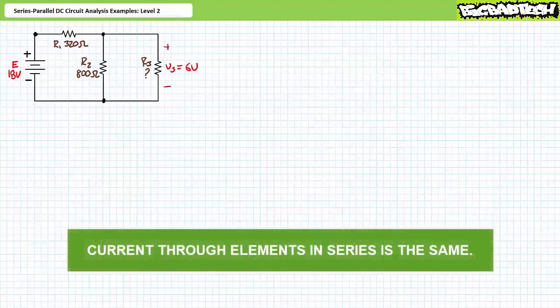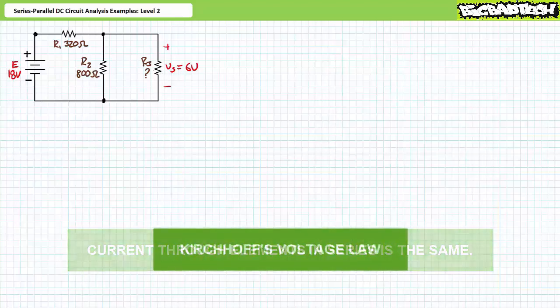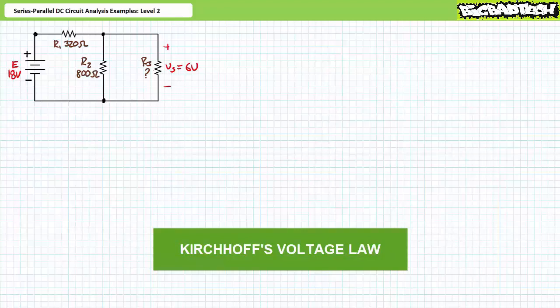You will no doubt recall that current through elements in series is the same — this is the most fundamental series circuit property. Additionally, Kirchhoff's voltage law states that for any closed loop, the summation of voltage rises equals the summation of voltage drops. In short, what goes up must come down.